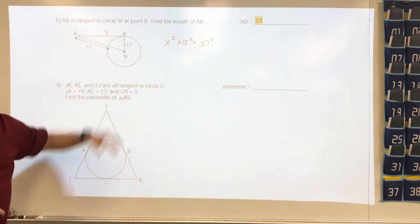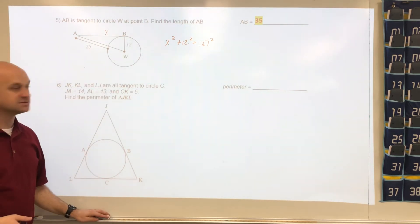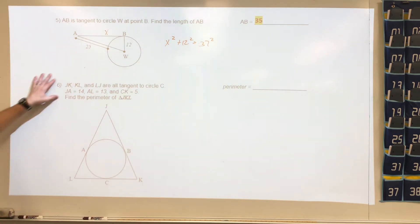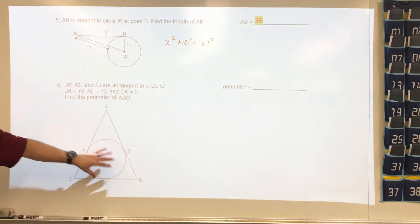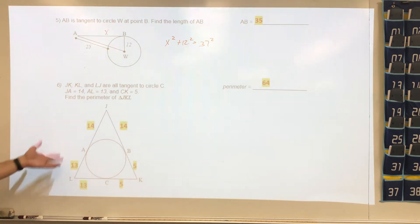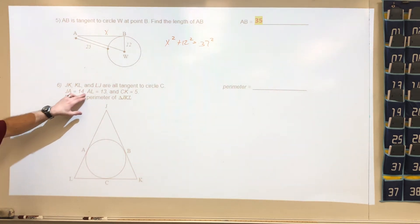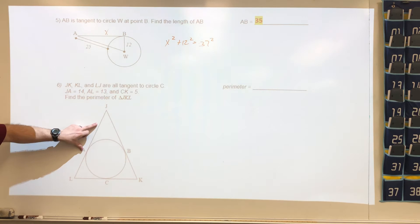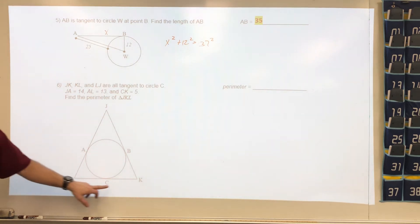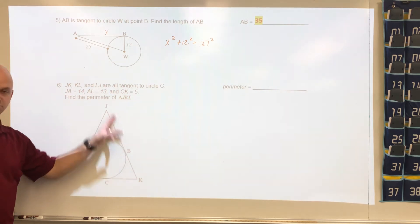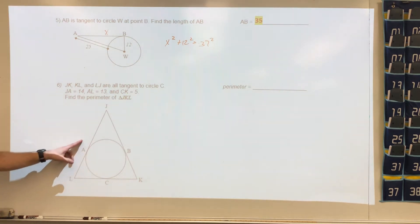For number six, they want to know the perimeter and they tell us these are all tangents. We're going to be given JA, we're going to be given AL, and we're also going to be given CK. Whatever JA is, it's also going to be JB. Whatever AL is, that's also going to be LC, and so on.